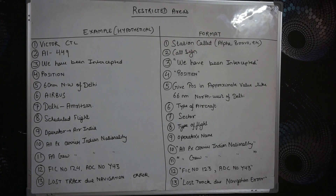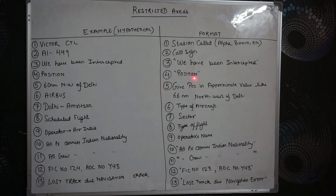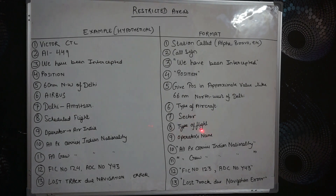Then we'll say the call sign. We will not give the frequency because we don't know the frequency of Alpha Bravo Charlie - if it is given in the paper you can use the frequency, otherwise don't say the frequency. Then you have to use the phrase: 'We have been intercepted.' Give position as an approximate value - like 60 or 66 nautical miles northwest of Delhi. Then you have to mention the type of aircraft, the sector you're flying, the type of flight - scheduled or non-scheduled - and the operator's name. Then say all passengers carry Indian nationality and all crew carry Indian nationality.